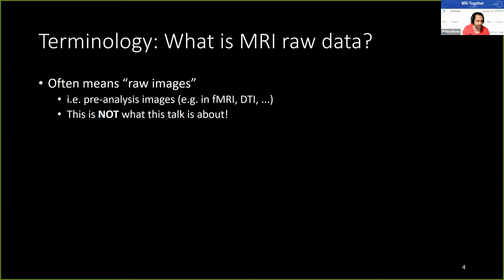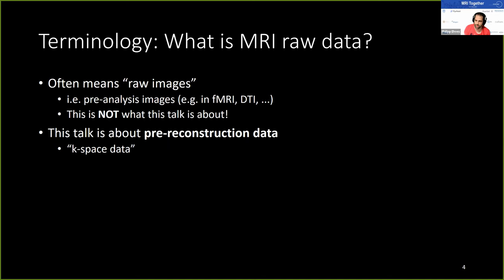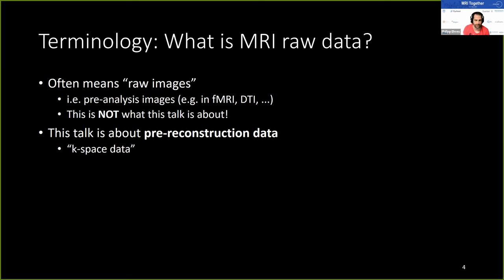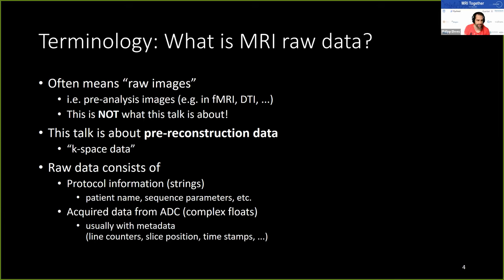First, it's important to define what MRI raw data actually means. Sometimes it's a bit confusing, since the term is often used for raw images — pre-analysis images like fMRI or DTI — but that's not what this talk is about. This talk is about pre-reconstruction data, so k-space data. Usually this raw data consists of protocol information such as the sequence name and sequence parameters, as well as the data actually sampled by the ADC — the analog-to-digital converter. It's complex floating-point data which usually also includes metadata such as line counters, slice position, and timestamps. All of this can be stored in one or multiple files depending on the file format.